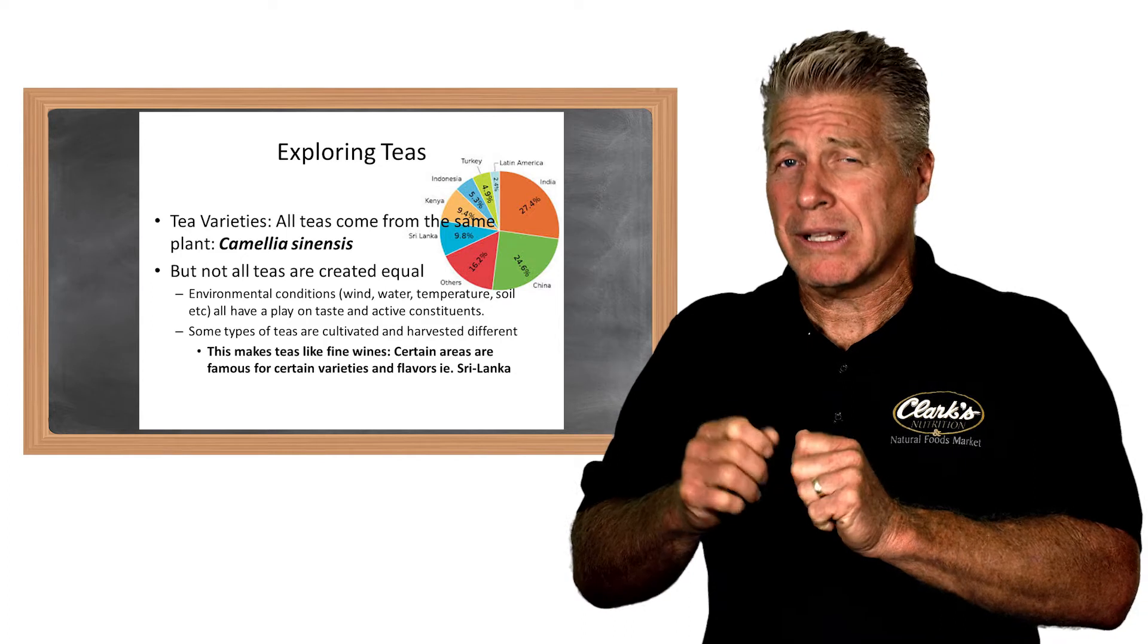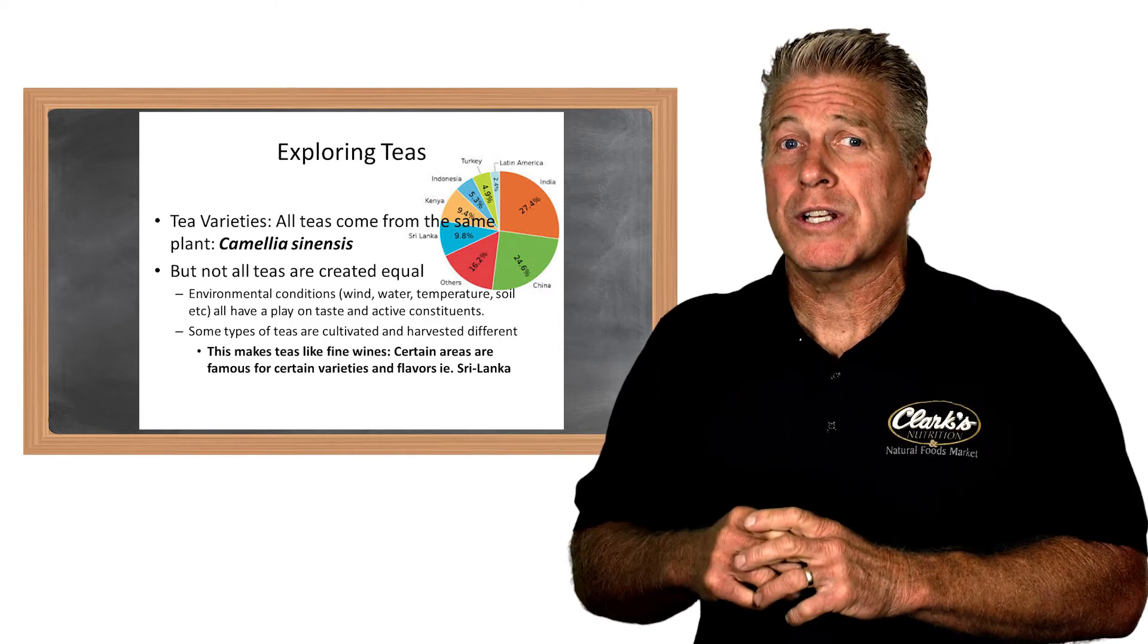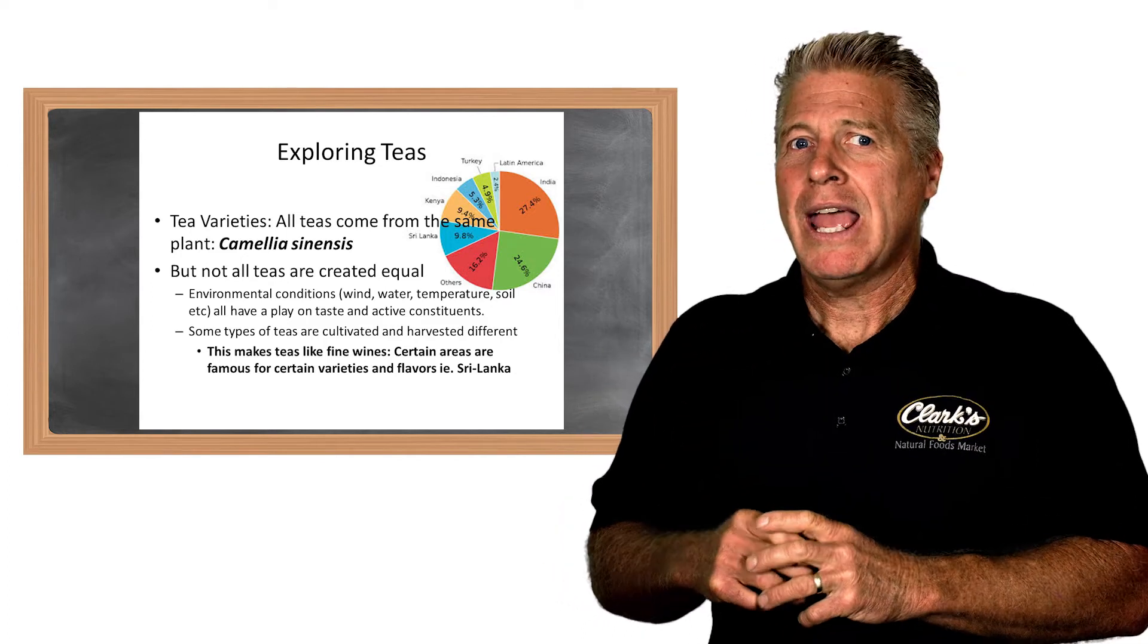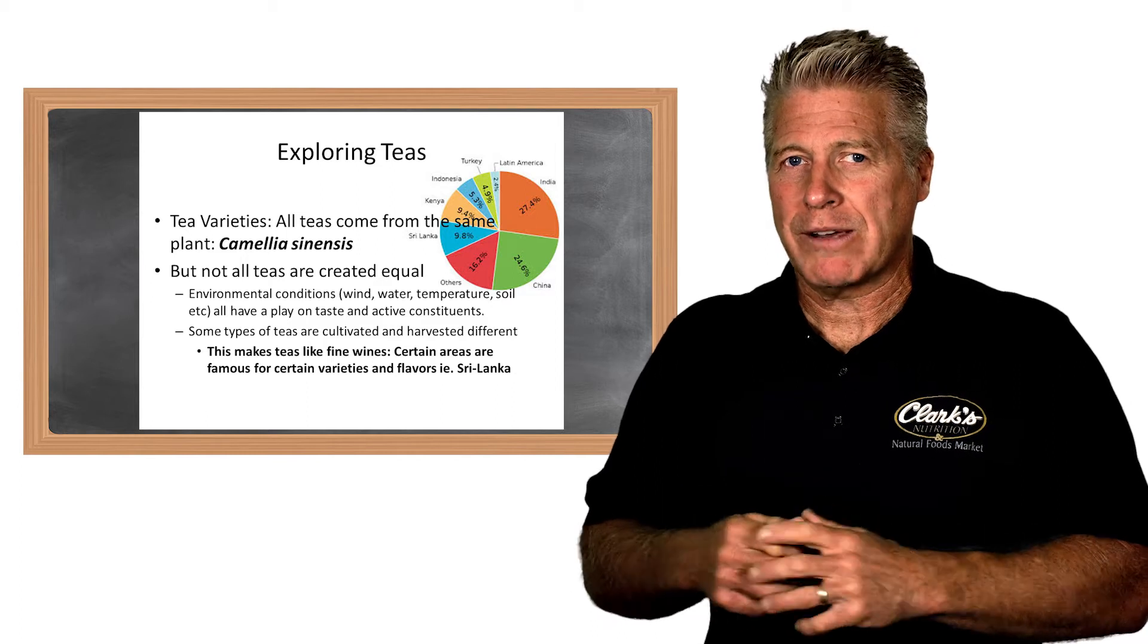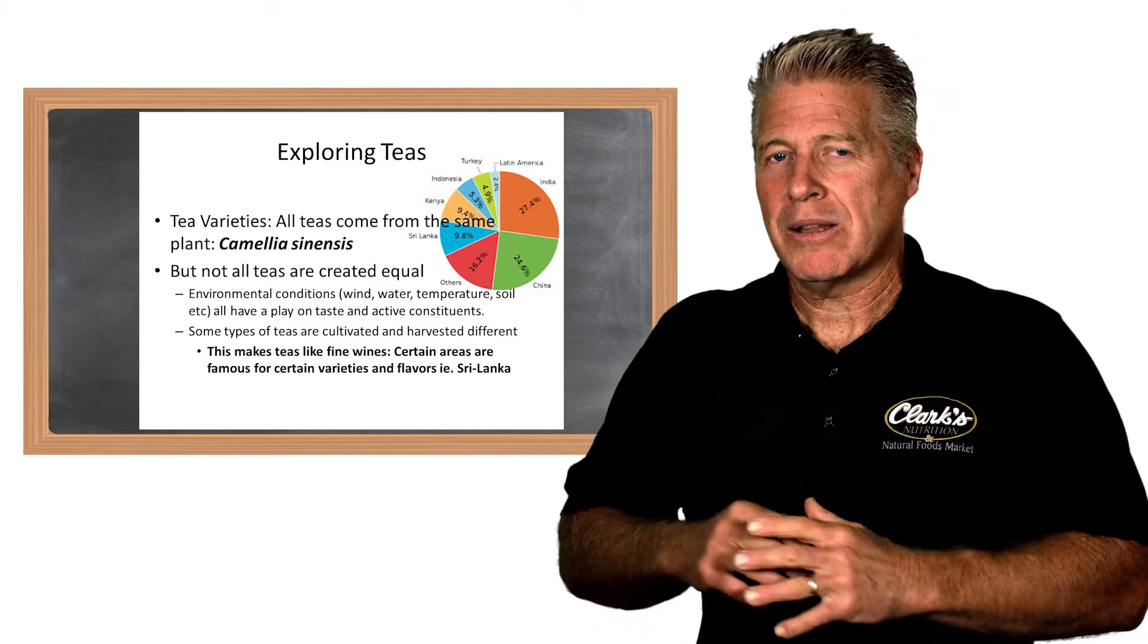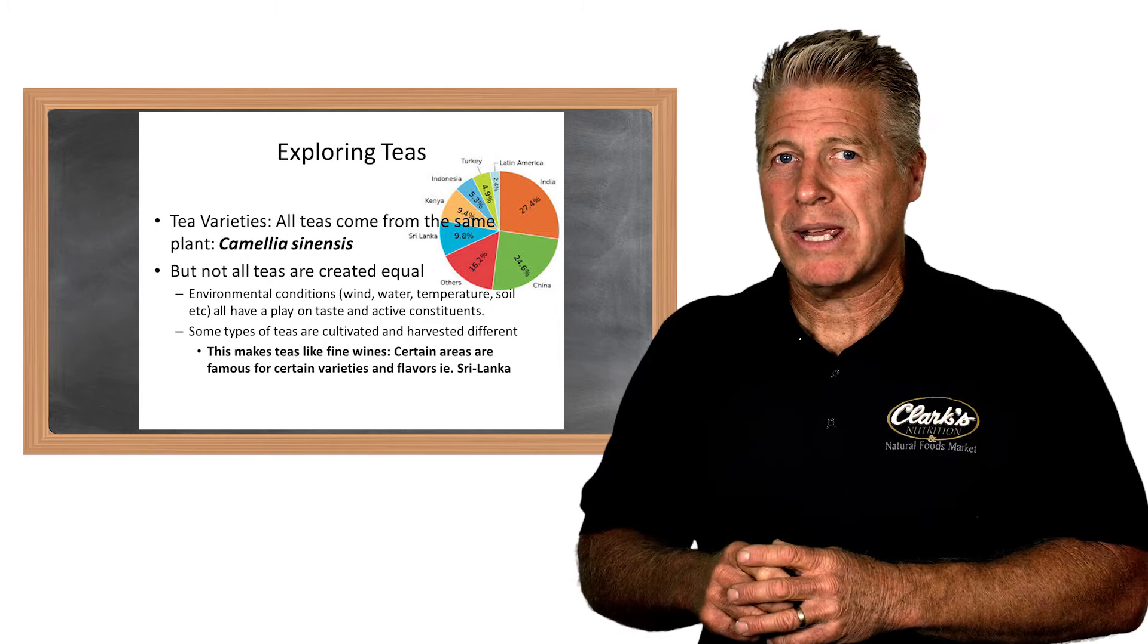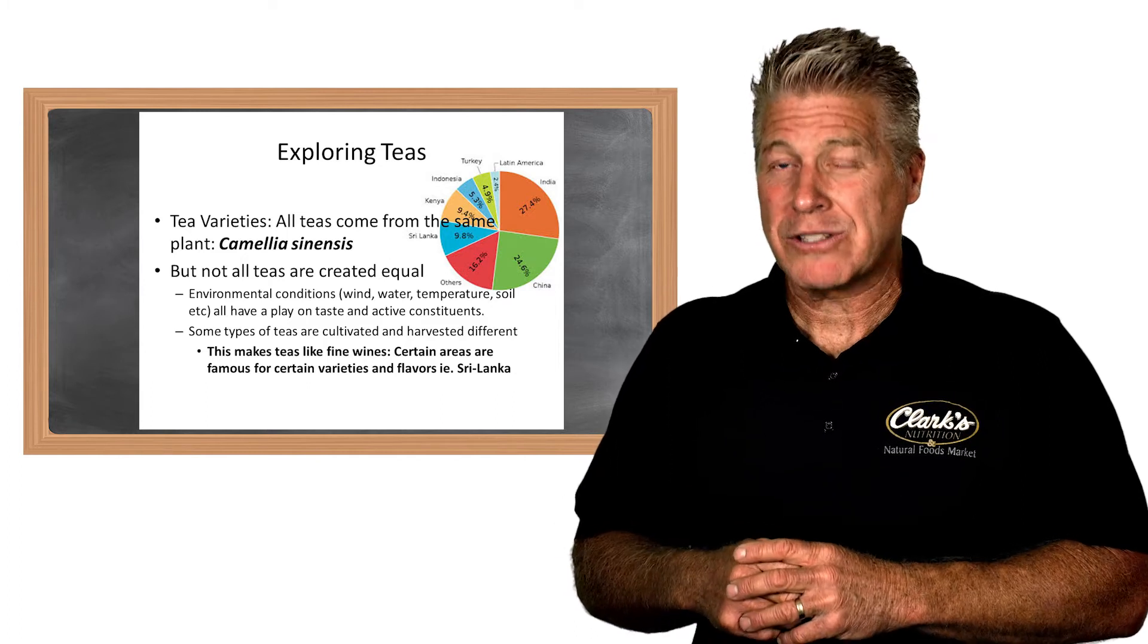They pick it just about the time that it's starting to bud or open up as a leaf. Then it's dried and processed to a point of refinement, like making a leaf and then put into a container. It's actually called white tea.